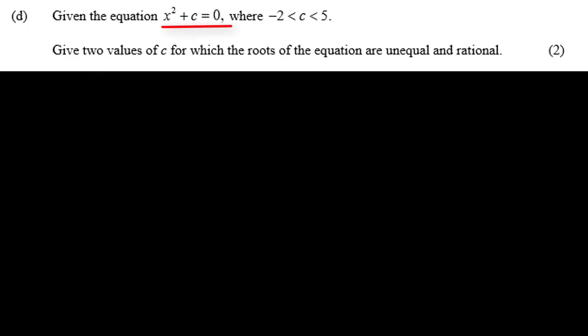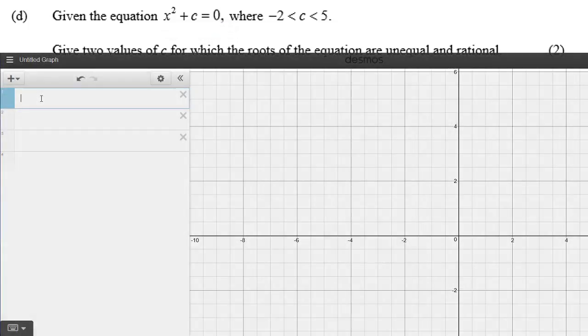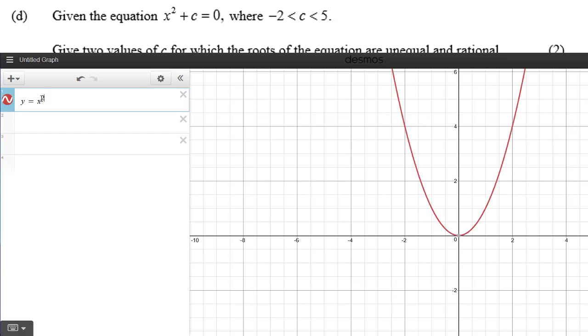First, this is a quadratic, a simple one, with only the squared term and a constant. In a simple quadratic like this with no x term, you'll see that the quadratic is symmetrical about x equals 0, and it passes through the origin at (0, 0).